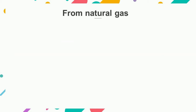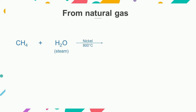Hydrogen can also be obtained from natural gas. Natural gas consists mainly of methane, that is CH4. Natural gas mixed with steam and compressed to a pressure equal to 30 atm is passed over heated nickel at about 800 degrees Celsius to form water gas. Hydrogen is then obtained from water gas as explained in the Bosch process.